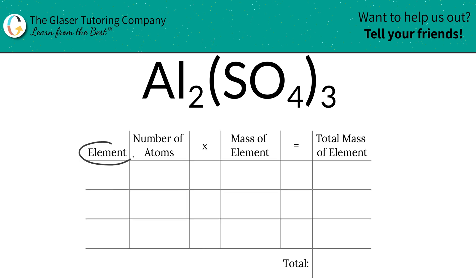The first thing I'm going to do is just write down the elements that I have. So I have aluminum, I have sulfur, and I have oxygen.